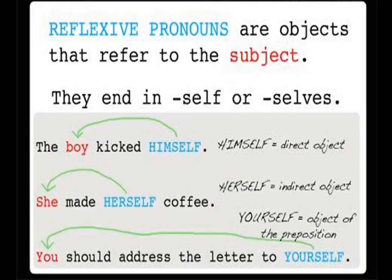The next topic is Reflexive Pronouns. 'Reflexive' means it reflects back to the subject in the sentence. Reflexive pronouns always end with the word 'self' (S-E-L-F) or 'selves' (S-E-L-V-E-S). For example: 'The boy kicked himself.' Here, 'himself' is the direct object and reflects back to 'the boy' in the sentence.